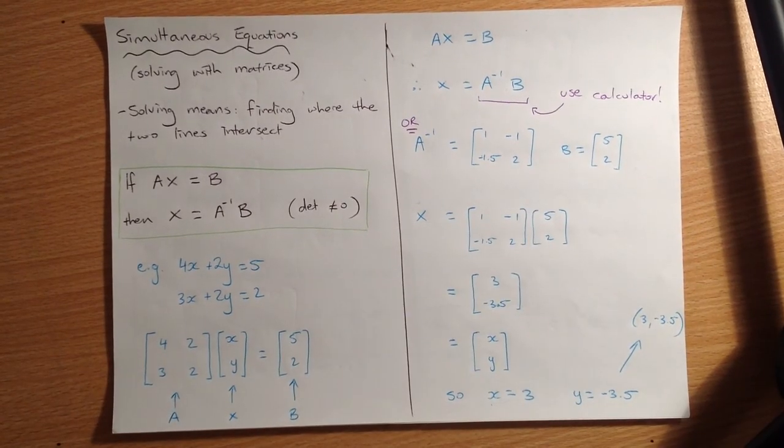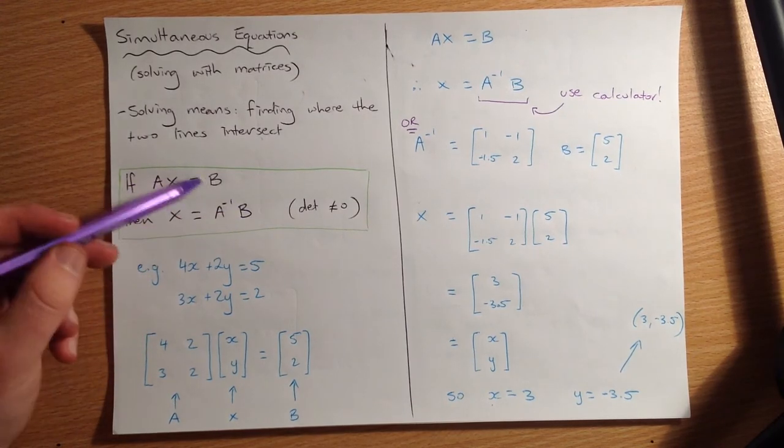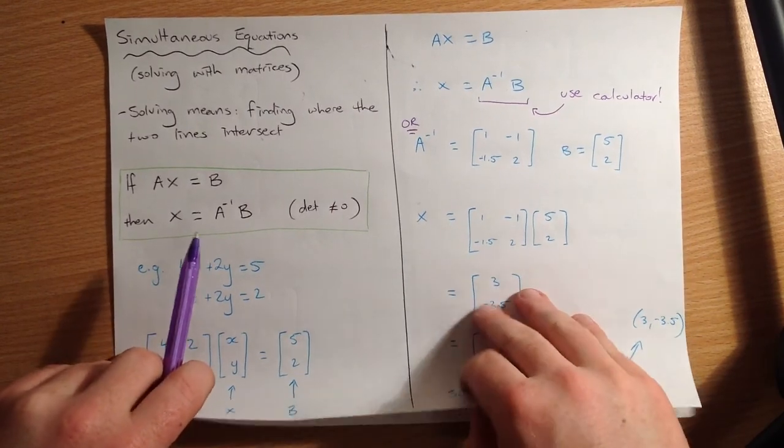And if we drew the graph and we drew the two lines, you'd see that they crossed at that point there, 3, negative 3.5. So the same process, we're always just following this rule. We set it up and then we find X equals A inverse of B. We'll get practice at that, I promise.